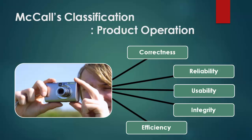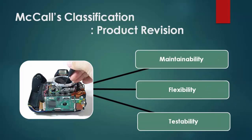In his classification, the product operation category covers basic operational characteristics — or in other words, quality is what the user expects and values in the system to perform day-to-day activities. The qualities in this category are correctness, reliability, usability, integrity, and efficiency.